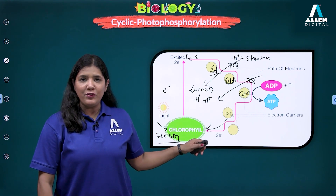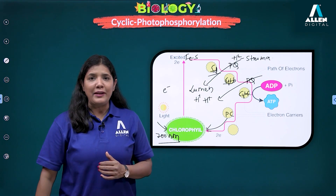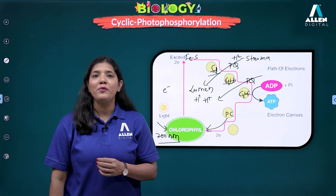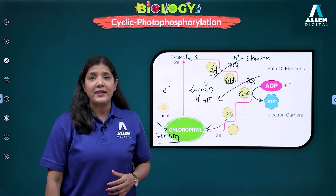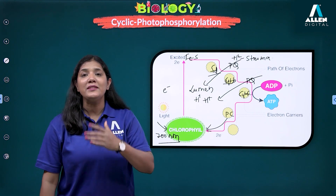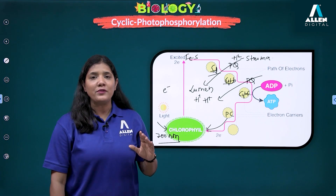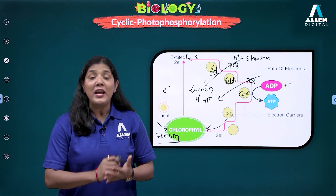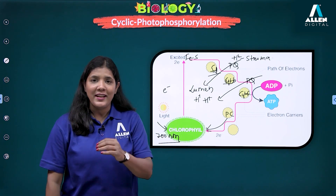After completing cyclic photophosphorylation, you know what is synthesized here. But when we started the light reaction, we noted that there will be splitting of water, formation of NADPH2, and involvement of photosystem II — but none of that occurs in cyclic photophosphorylation. That is because those are part of non-cyclic photophosphorylation. Cyclic photophosphorylation gives us only two ATP. The splitting of water, formation of NADPH, and involvement of two photosystems are all part of non-cyclic photophosphorylation.